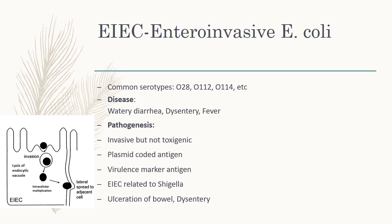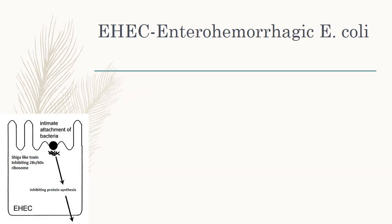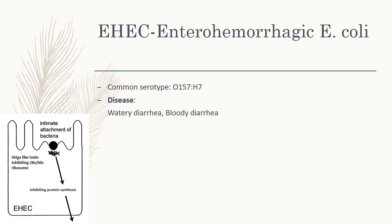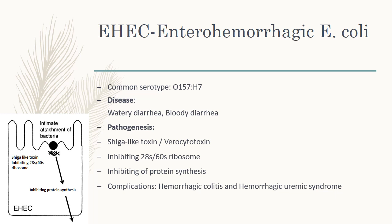This spreading causes ulceration of the bowel and dysentery. The next one is EHEC, that is enterohemorrhagic E. coli. The common serotype is O157:H7. The patient presents with watery diarrhea and bloody diarrhea.